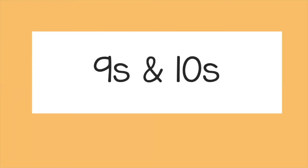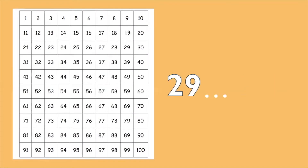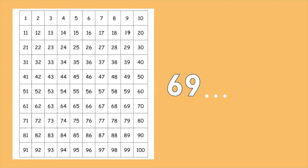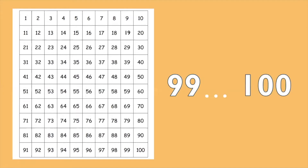Nines and tens. Nine, 10, 19, 20, 29, 30, 39, 40, 49, 50, 59, 60, 69, 70, 79, 80, 89, 90, 99, 100.